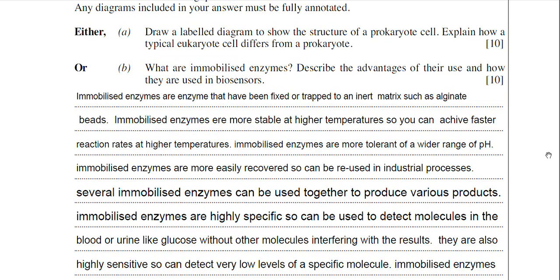I've typed out an answer there where I've tackled every aspect of the examiner's question. I've started off by describing the immobilised enzyme. I've said they're enzymes that have been fixed or trapped to an inert matrix such as alginate beads. I've said that immobilised enzymes are more stable at higher temperatures, so you can achieve faster reaction rates at higher temperatures.